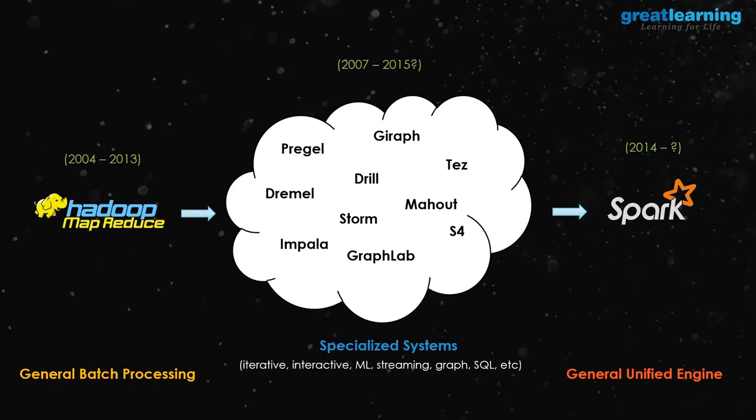From around 2007 till 2015, one of the problems with Hadoop was that MapReduce does batch processing — it is slow. So people wanted to try different types of workloads in Hadoop, and some of them wanted to write SQL queries on top of Hadoop.